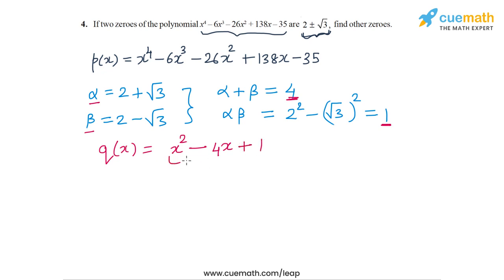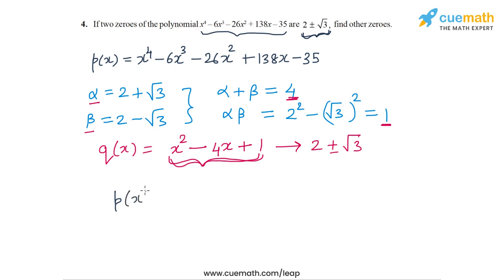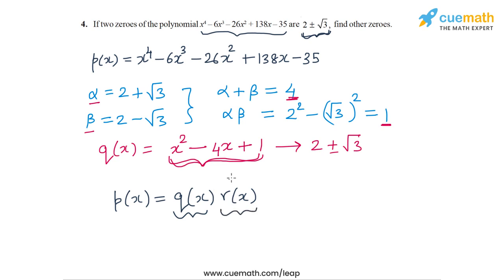A quadratic polynomial Q(x) with zeros alpha and beta can be written as x squared minus (sum)x plus (product), which gives x squared minus 4x plus 1. The zeros of Q(x) are 2 plus or minus root 3, which means Q(x) must be a factor of P(x). So we can write P(x) as Q(x) times some other polynomial R(x), where R(x) is also quadratic, and its zeros are the remaining two zeros of P(x).